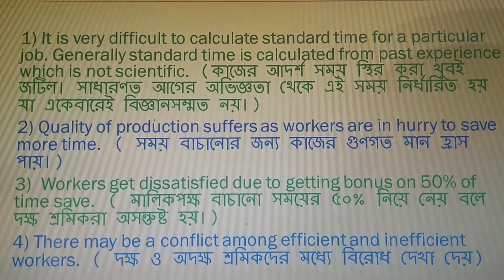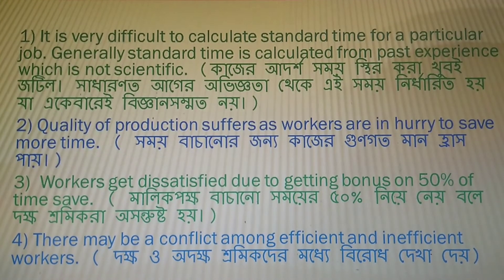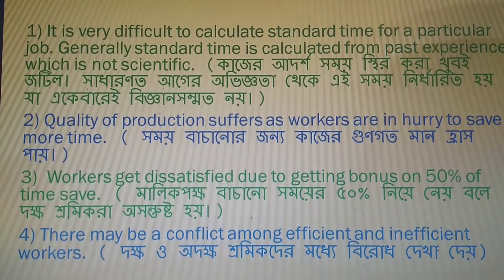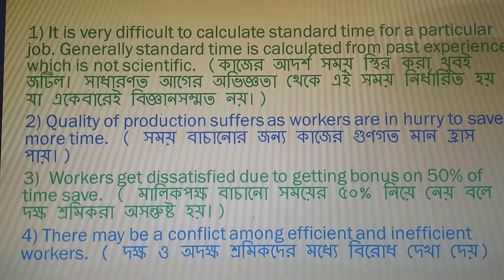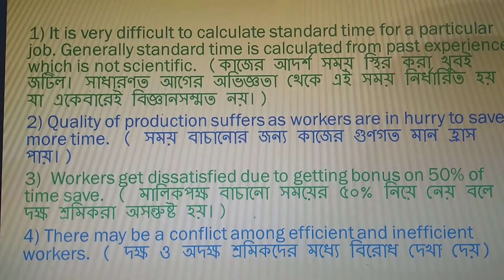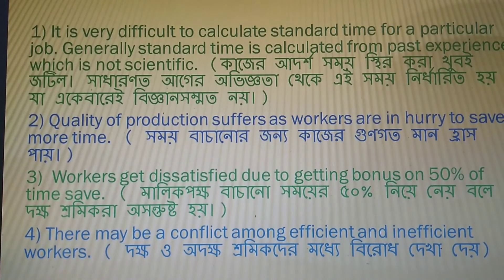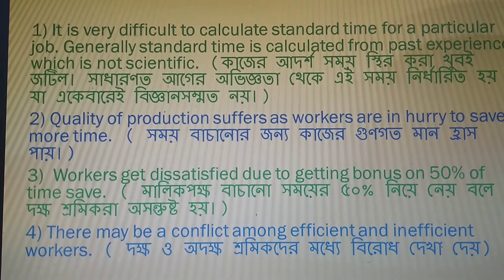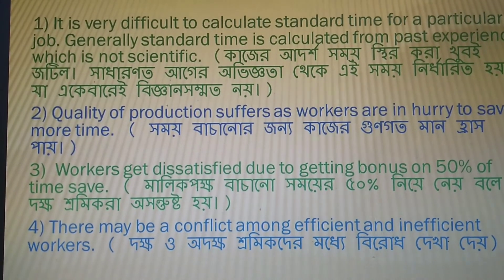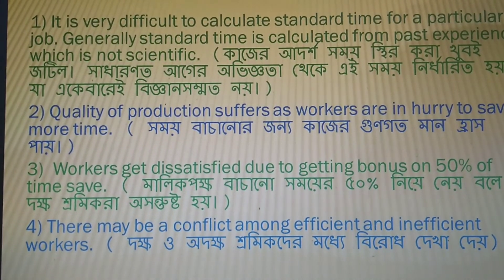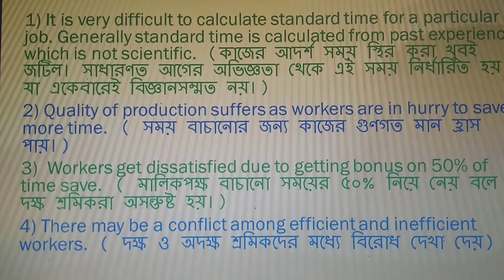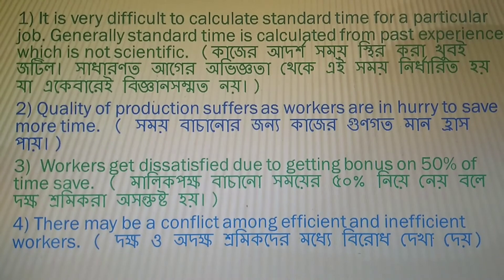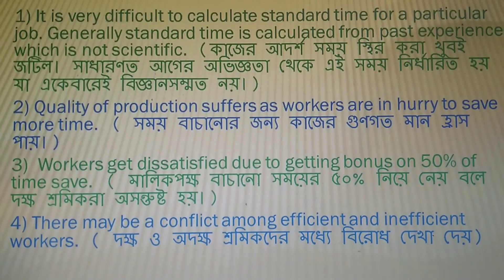The third disadvantage is that workers become dissatisfied because they get bonus on only 50% of the time saved. Workers feel that since they saved the time, they should get the full benefit. They question why only 50% bonus goes to them and 50% goes to the owner. This causes dissatisfaction among workers.